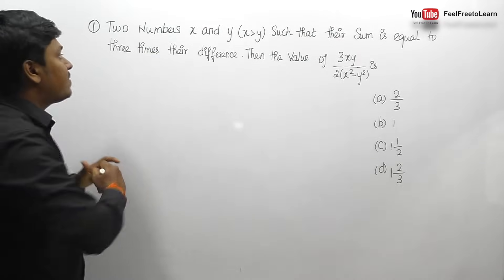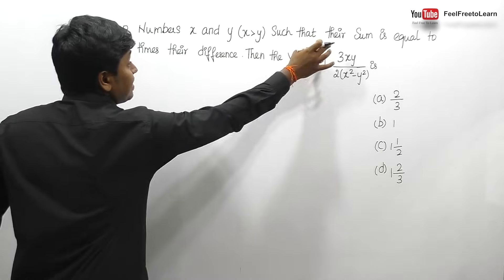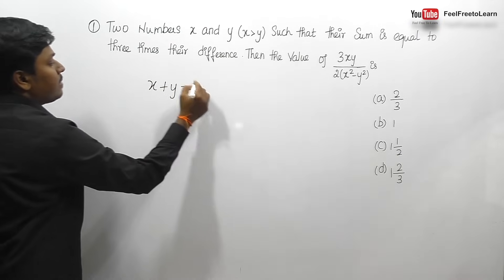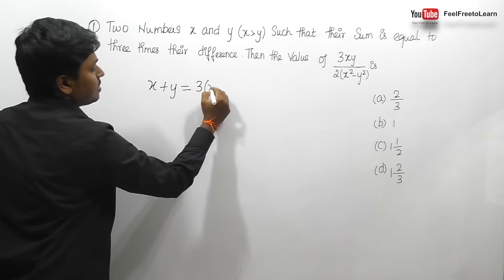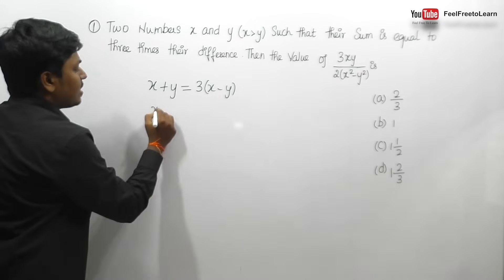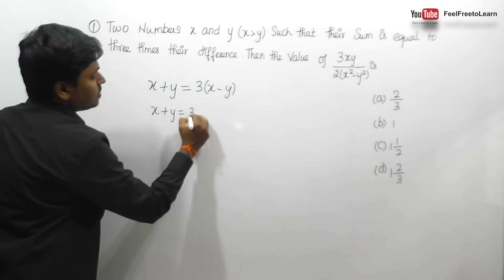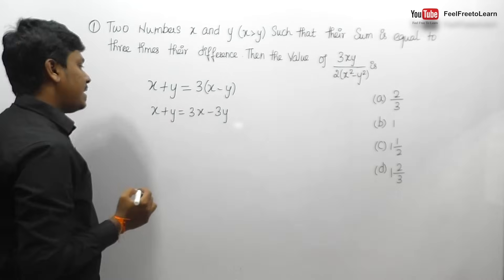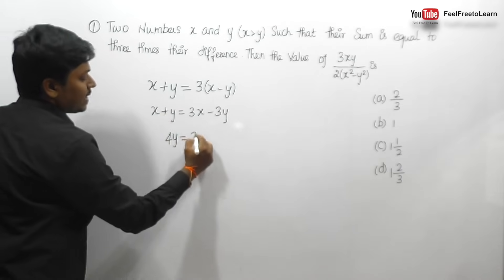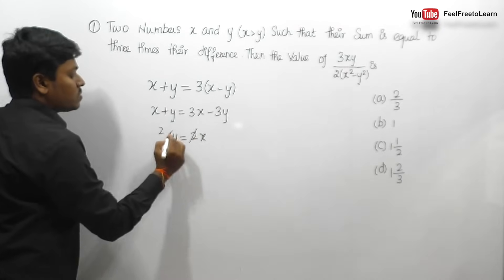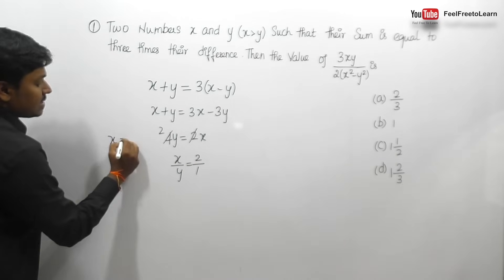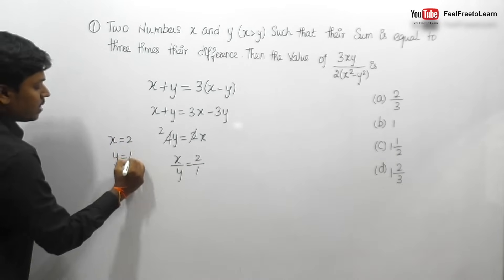Two numbers are x and y such that their sum equals three times their difference. So x plus y equals 3 times (x minus y), which gives x plus y equals 3x minus 3y. Bringing 3y to the left-hand side: 4y equals 2x. So x divided by y equals 2 divided by 1, giving x equals 2 and y equals 1.